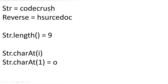Whatever input we have entered in this string — c, o, d, e, c, r, u, s, h — we want the output in reverse format. So the first character in the output will be h, then s, then u, then r, and so on.